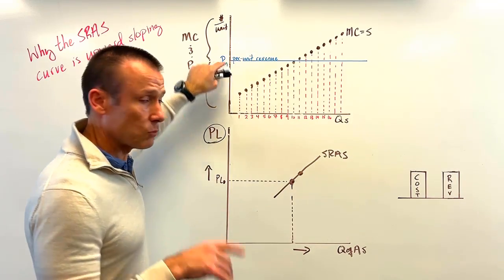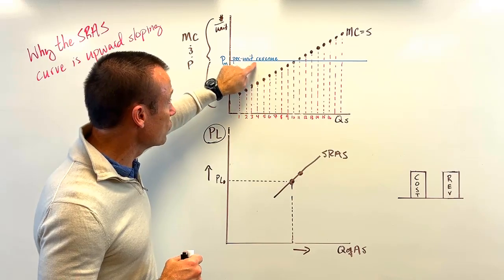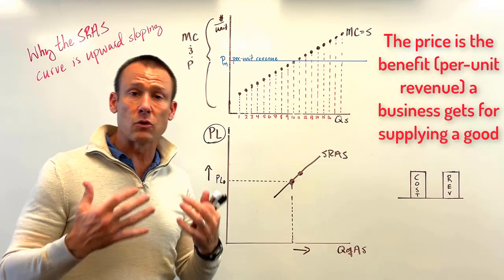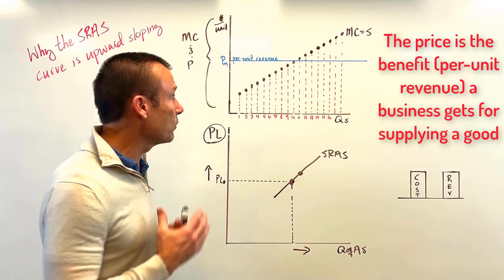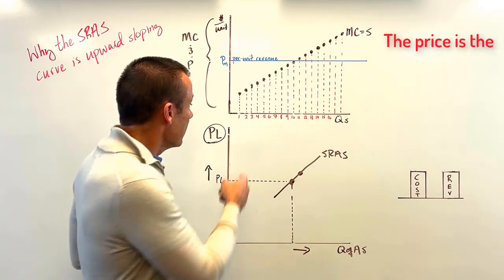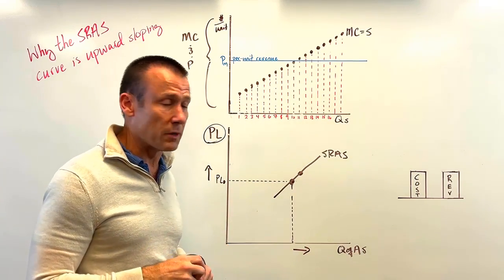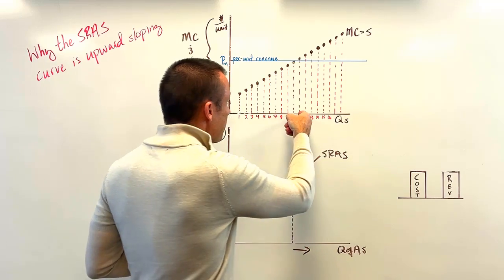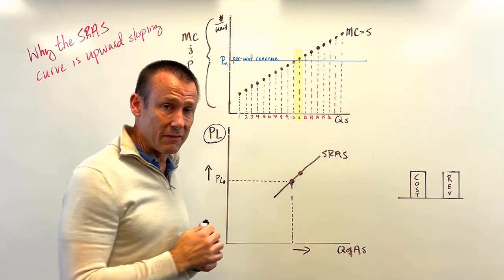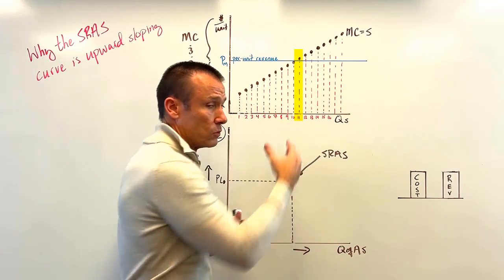Now bring in the price. The price for a particular good is the per-unit revenue — it's the benefit to the supplier of supplying that good. We will supply all goods for which the per-unit revenue — the price — is above the marginal cost. As soon as the marginal cost exceeds that per-unit revenue, which happens at the 11th good, we won't supply those anymore.